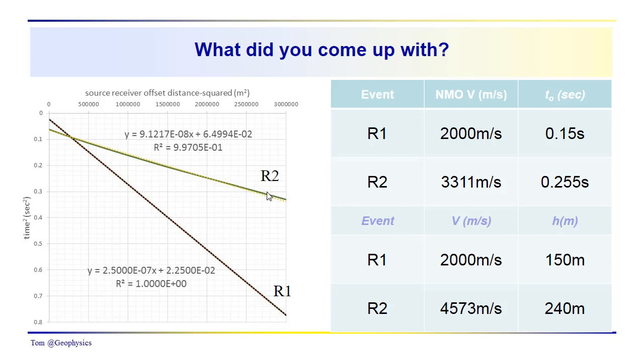A deeper one from the base of layer 2, R2, and these are the trend lines that we've fitted to these two events. We're looking at T squared, X squared data, so these are nearly straight lines. You can see that the R squared for the reflection from the base of layer 2 is not perfectly hyperbolic. We have an R squared here a little bit, tiny bit less than one.